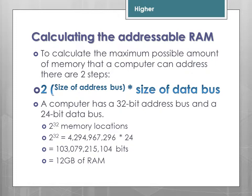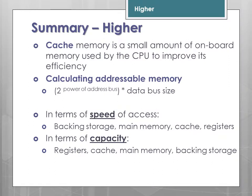For example, a computer with a 32-bit address bus and a 24-bit data bus: 2 to the power of 32 gives approximately 4.2 million locations. To summarise: cache memory is a small amount of on-board memory used by the CPU to improve efficiency. To calculate addressable memory, it is 2 to the power of the address bus, multiplied by the data bus. In terms of access speed, it goes from backing storage up to registers; in terms of capacity, registers are smallest, scaling up to backing storage.